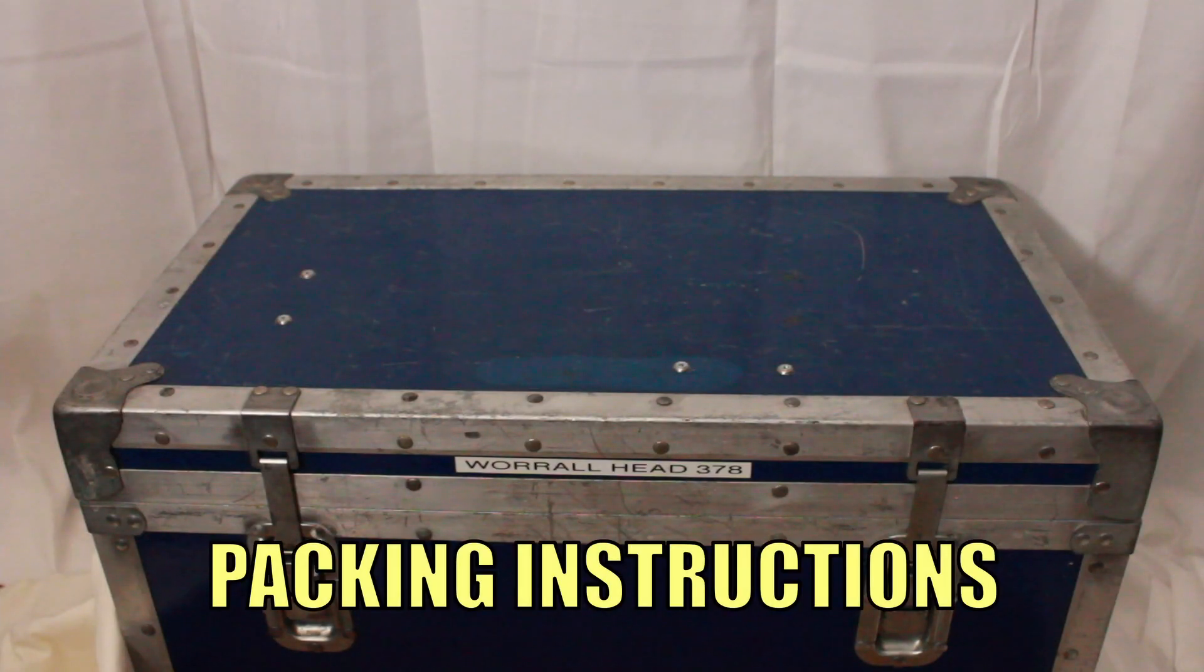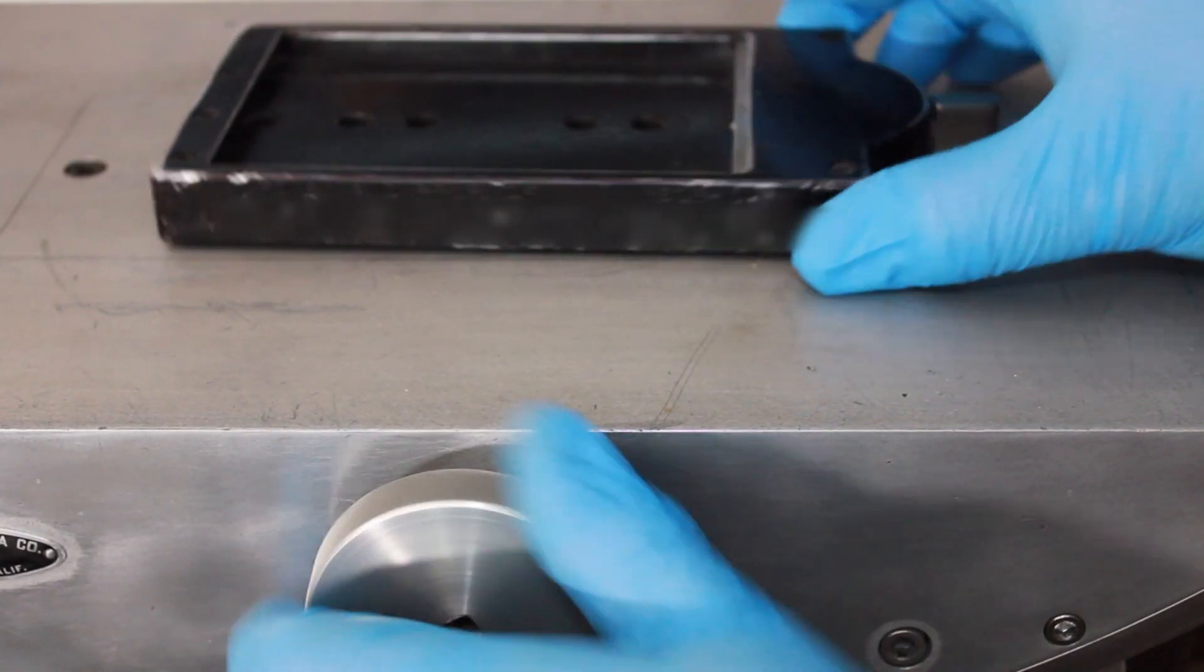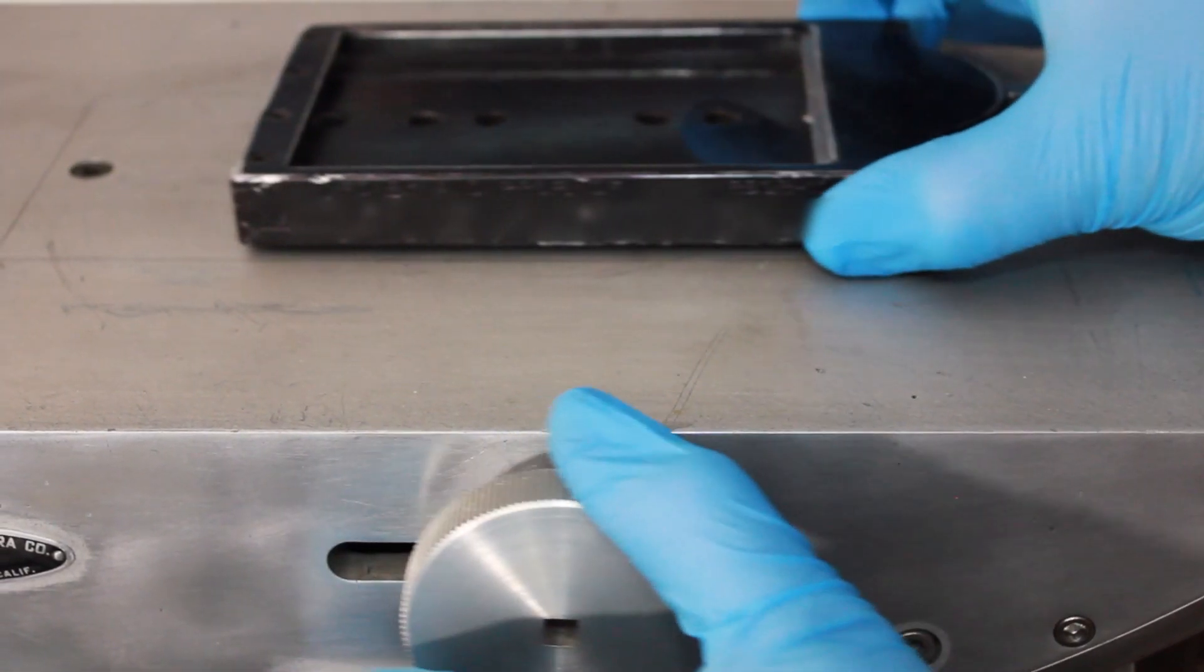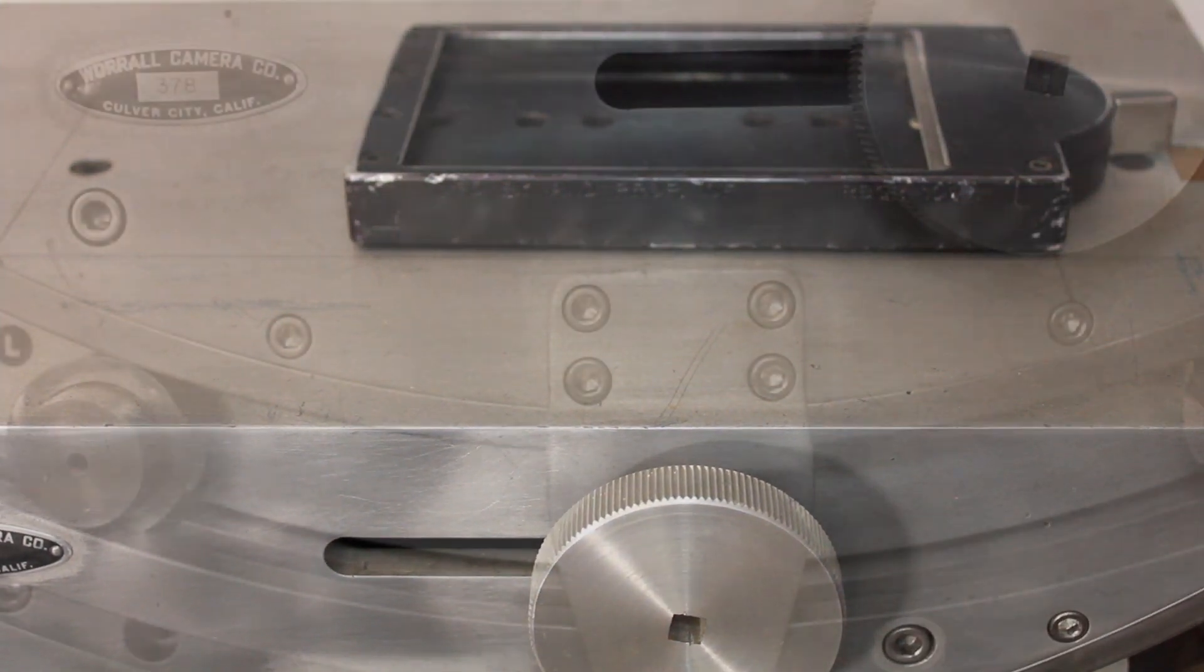Packing instructions. Important to prevent damage. Release knob and move quick release to the back position. Remove wheels.